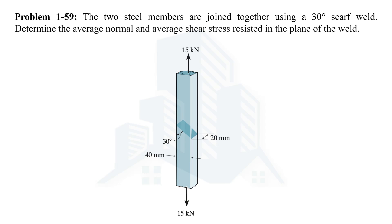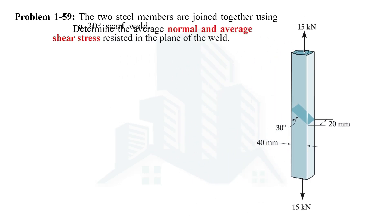Hello everyone. In this video we are going to solve problem number 59 from the chapter of stress in the book Mechanics of Materials by R.C. Hibbeler. In this problem we are being asked to determine the average normal and average shear stress at the plane of weld which joins these two steel members together.